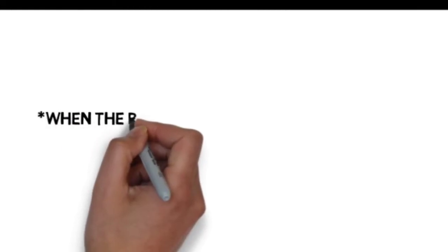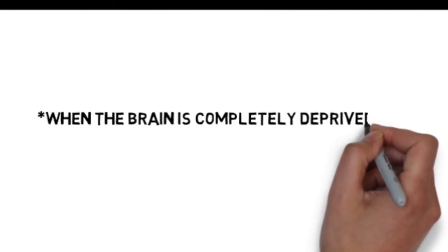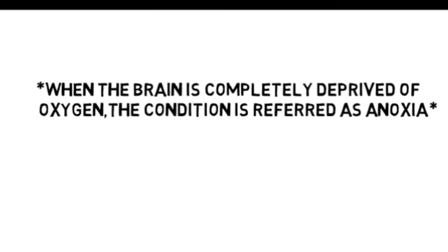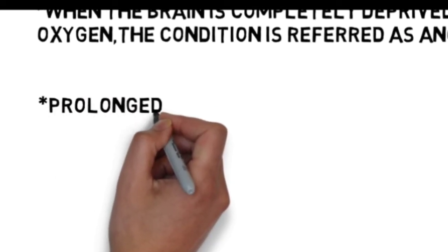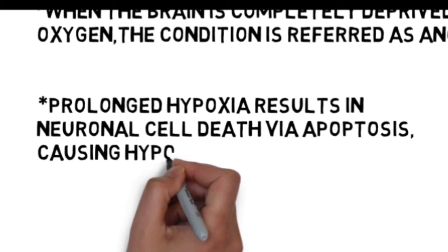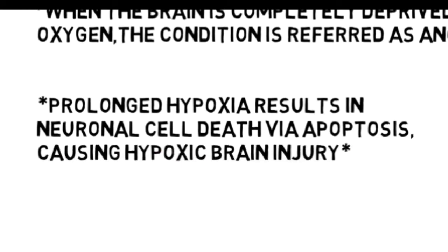The physiological condition when the brain is completely deprived of oxygen is known as anoxia. Prolonged hypoxia results in neuronal cell death via apoptosis, causing hypoxic brain injury.